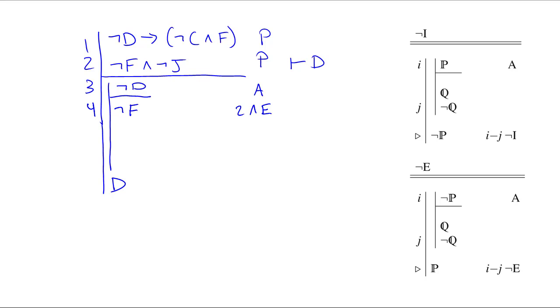Now, to get at the other F, we need to get the consequent out of line 1. Luckily, the antecedent of line 1 was our auxiliary assumption in line 3. So 1 and 3, arrow elimination, is going to get us not C and F. And we can pull the F right out of there with a wedge elimination, conjunction elimination.